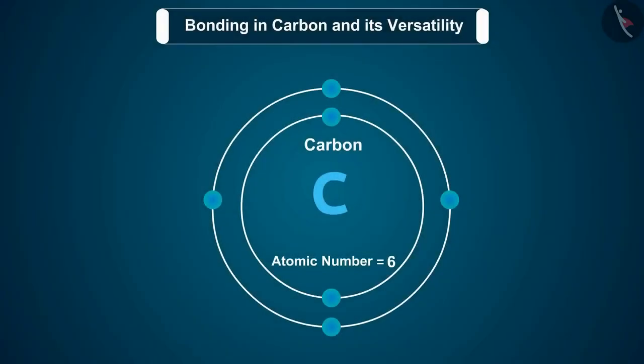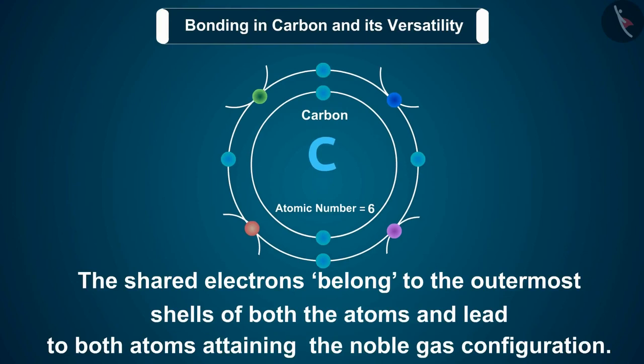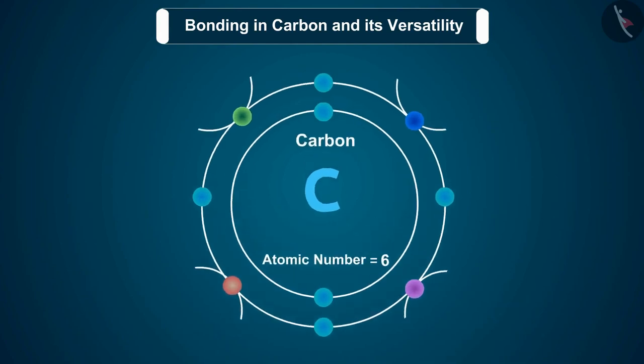Not just carbon, but many other elements form molecules by sharing electrons in this manner. The shared electrons belong to the outermost shells of both the atoms and lead to both atoms attaining the noble gas configuration. Before going on to compounds of carbon, let us look at some simple molecules formed by the sharing of valence electrons.